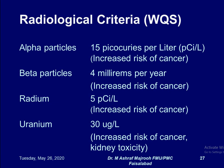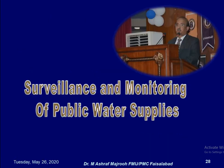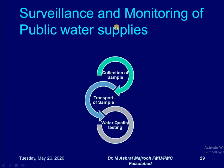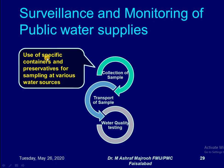Surveillance and monitoring of public water supply is very important in water supply management. The steps for surveillance and monitoring of public water supply include: collection of water samples using specific containers and preservatives for sampling at various water sources, transport of samples in specific boxes with maintenance of cold chain and temperature, and water quality testing covering physical, microbiological, chemical, and radiological testing.